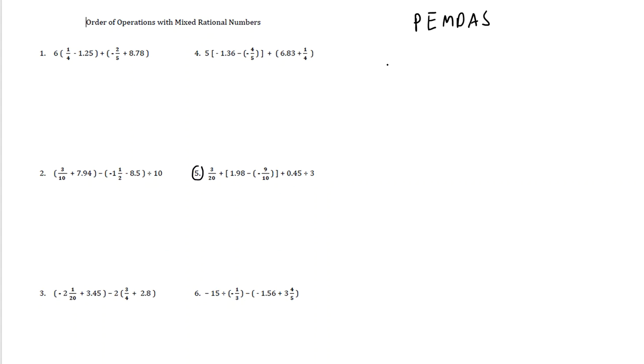That's a good one. So we have 3/20 plus, inside the bracket we have 1.98, we have a subtract, and then we have a negative 9/10, and then we have a bracket, and then we have an addition, and then we have 0.45 that's going to get divided by 3.